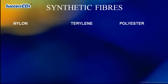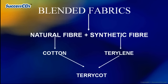Here are the names of some synthetic fibers: Nylon, Terylene, and Polyester. They are all made with the help of chemicals. Natural fibers are comfortable and skin-friendly but expensive, whereas synthetic fibers are not very comfortable but are cheap and easy to maintain. Thus, natural and synthetic fibers are mixed together to get blended fabrics — for example, Terricot, a blend of cotton and Terylene.